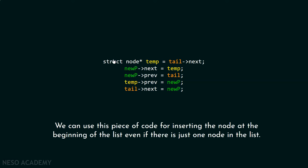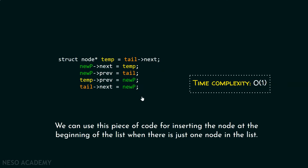There is no need for creating separate code for adding a node at the beginning when there is just one node. We can use this same code for that case as well. The time complexity of this piece of code is obviously constant — that is, O(1). So it is clear that adding a node at the beginning of the circular doubly linked list takes constant time.